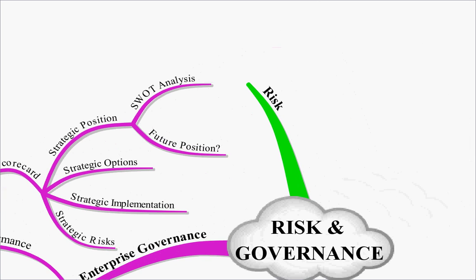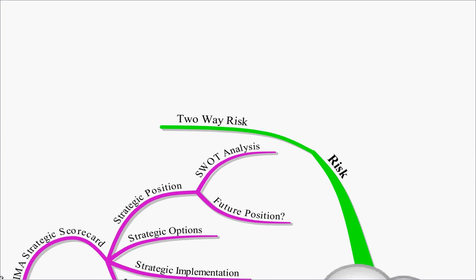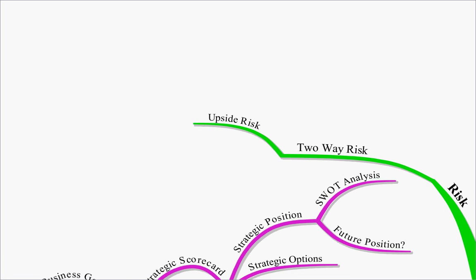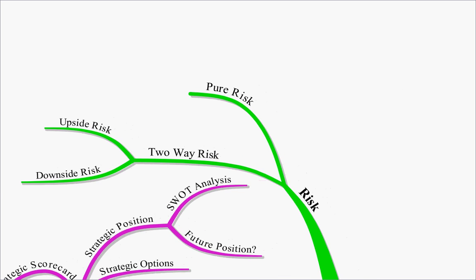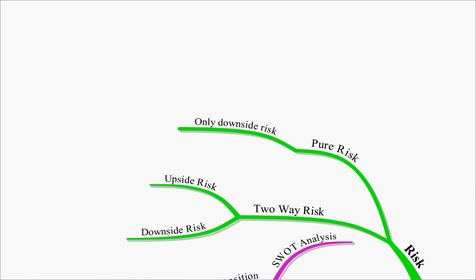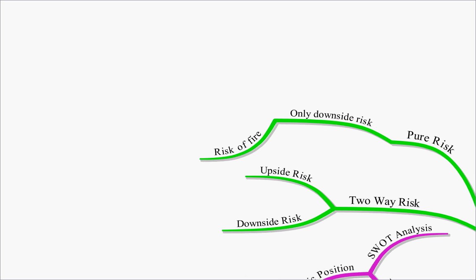This brought us on to look at different types of risk. Remember we looked at two-way risk. This was upside risk and downside risk, as opposed to pure risk. Pure risk only covers downside risk. That's the risk of something like a fire - there's no upside to that.